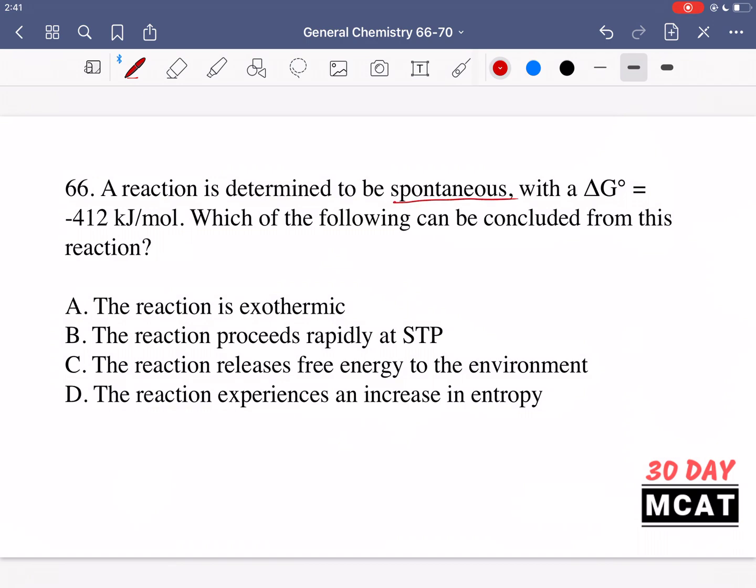So we know that a reaction is spontaneous. Here's the delta G° value. It doesn't even really have to be given to us. We just need to know that it's spontaneous, then we know delta G° is negative. And then what can we conclude?